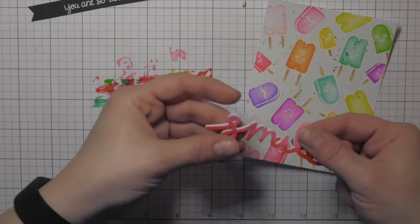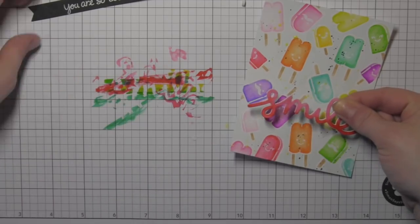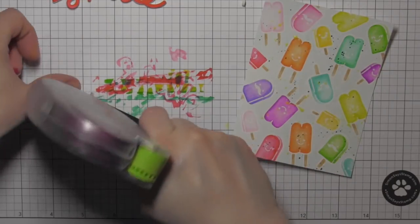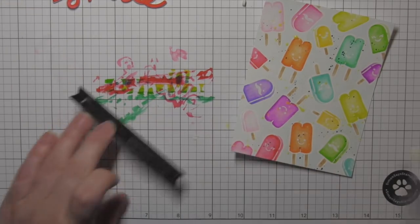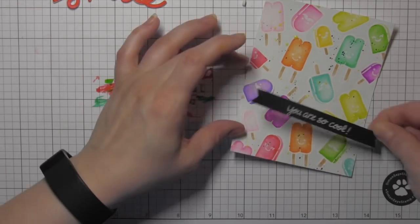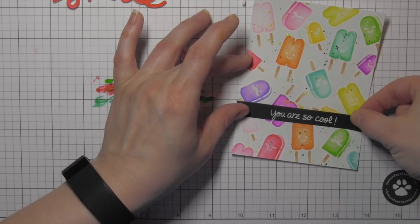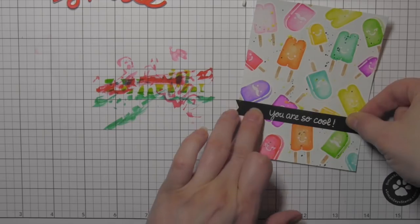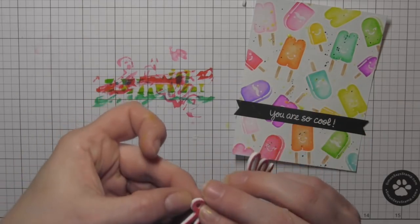And there is my nice fun foam word which is going to make some great dimension for my card. I will take some adhesive and place that on the back of the banner, and then go ahead and pop that right on my popsicle background. I'm going to line it up. It's barely going to overlap. This panel is slightly smaller than an A2 size card, so the banner will not hang off the edge of the card. It will mail perfectly.